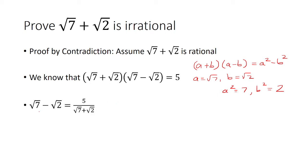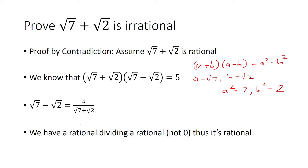Now let's solve for the square root of 7 minus the square root of 2. That's going to be 5 over the square root of 7 plus square root of 2. On the right, we have a rational number — the 5 — dividing another rational number, the square root of 7 plus square root of 2, and note that this is not 0. Thus it's rational, because rational numbers are closed under division, assuming you're not dividing by 0.